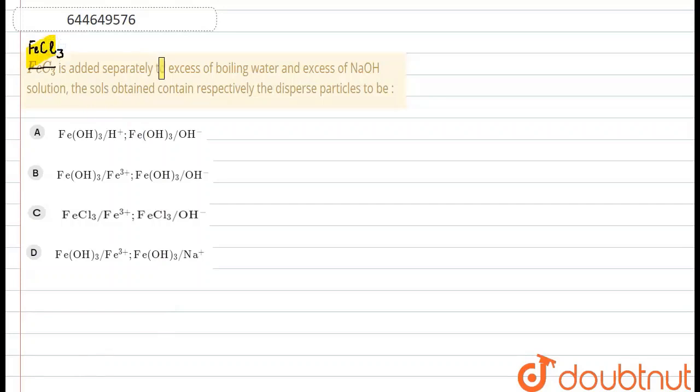FeCl3, when it is added to excess of boiling water and excess of NaOH solution, the solutions obtained contain respectively the dispersed particles to be. So in the following question, we have to find out of the following options which is the correct option.